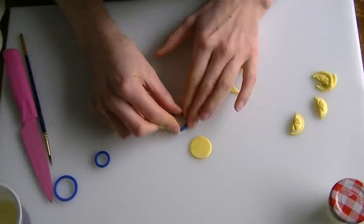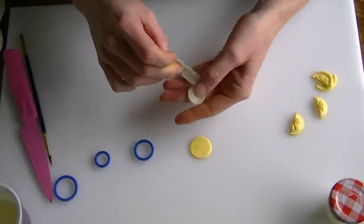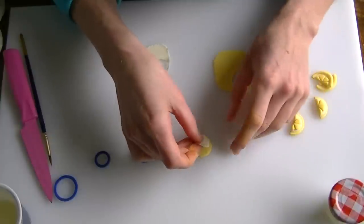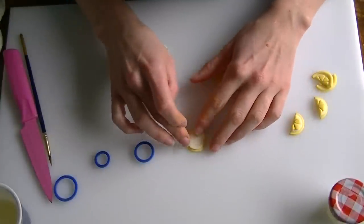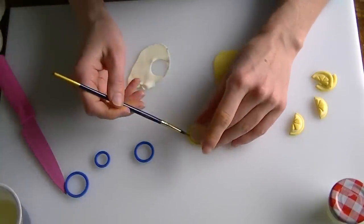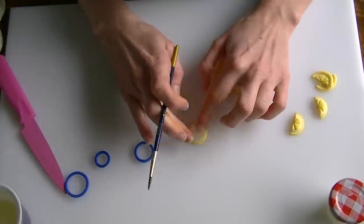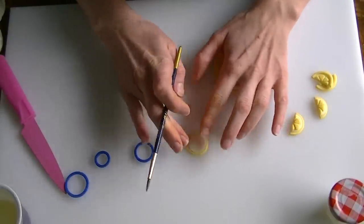So now I'm going to use my next size down, my medium cutter. You want it so it's just a little bit smaller than the circle that you've just cut out. I'm just going to pop a little bit of water on there and just press that lightly.